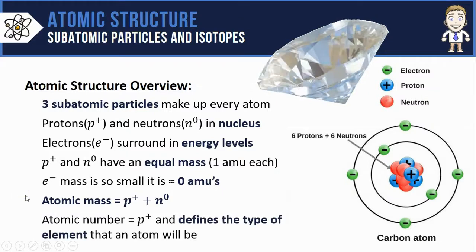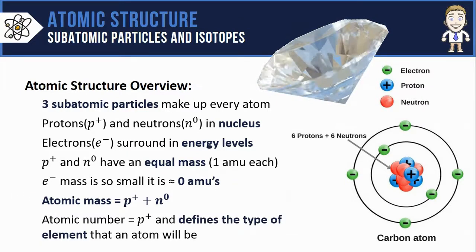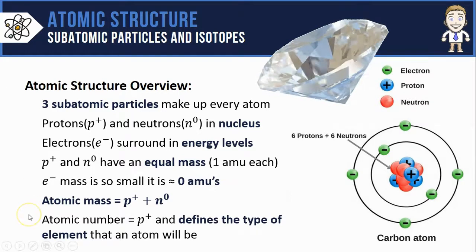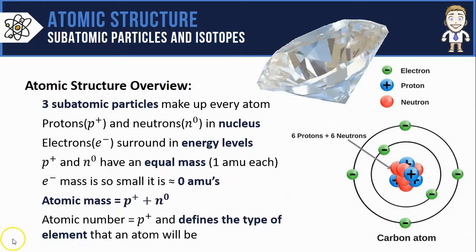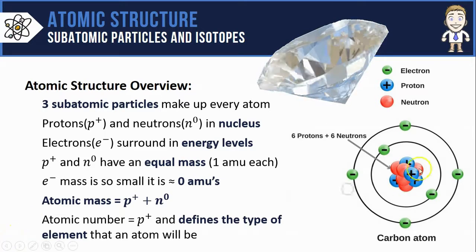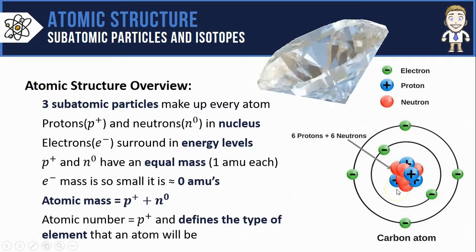The other way we define an atom is by the atomic number. This is simply how many protons it has, and it's extra important because the atomic number defines the type of element that an atom will be. That means right now the only thing causing this atom to be an atom of carbon is the fact that it has six protons.